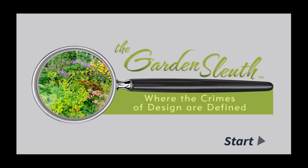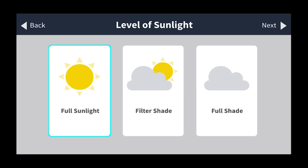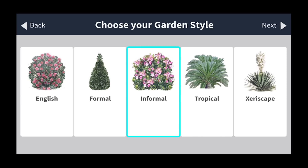Hit the start button to begin. First thing you want to do is choose the region in Texas you live in. Hit the next button. Next, choose how much sunlight you have. Let's go with full sun. Hit the next button.